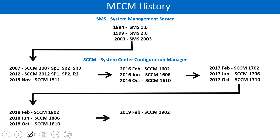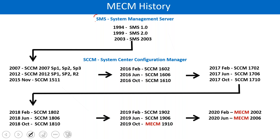SCCM historical background: SCCM started as SMS — System Management Server — in the year 1994. Then SMS 1.0, then SMS 2.0 in 1999, then SMS 2003, then SCCM. Microsoft changed the name from SMS at that point. Then Microsoft released SCCM 2007, 2012, 2015, and 2011. From there, they started giving names as year and month.